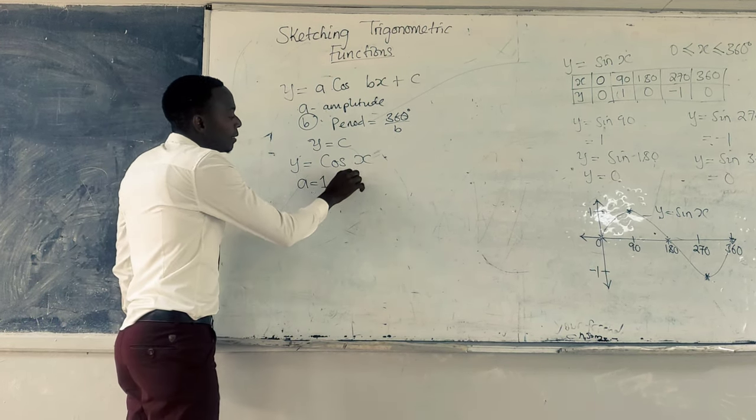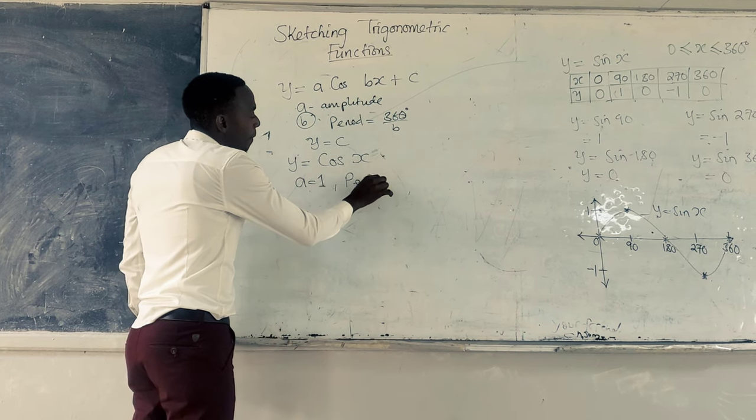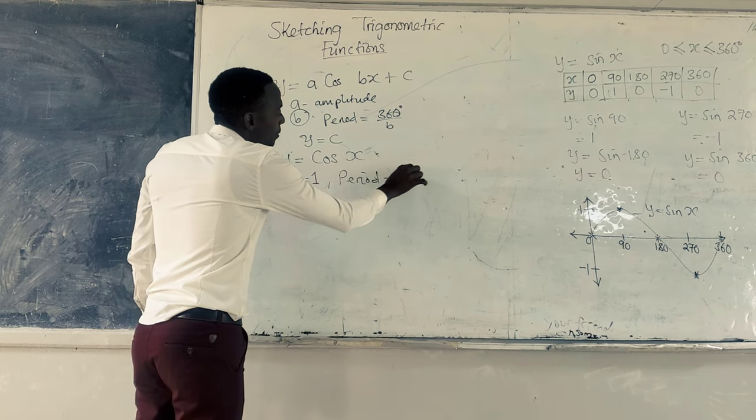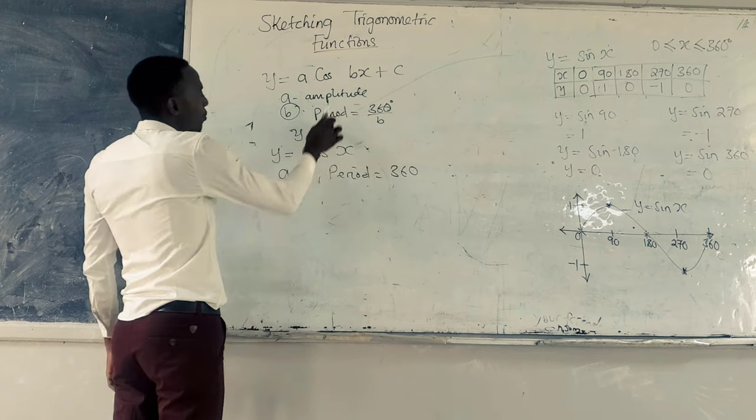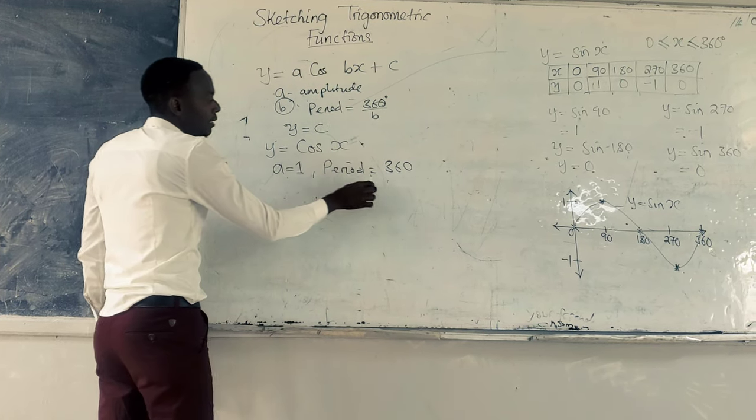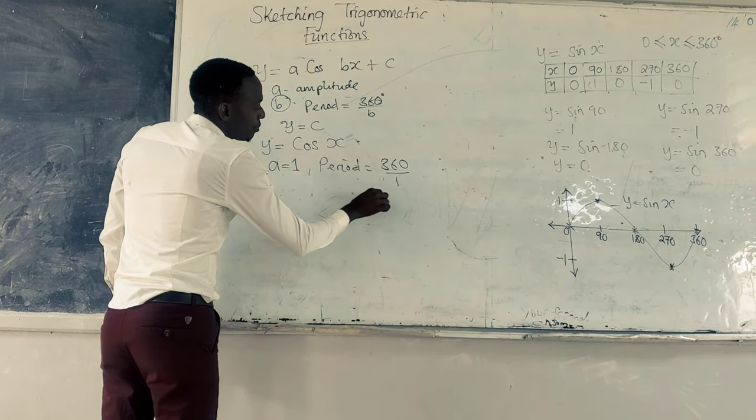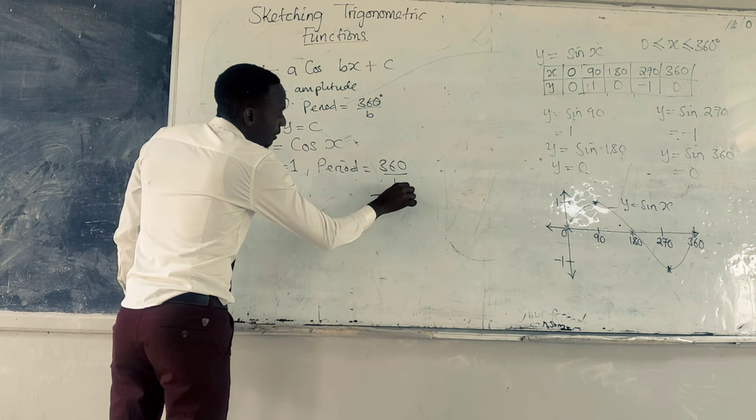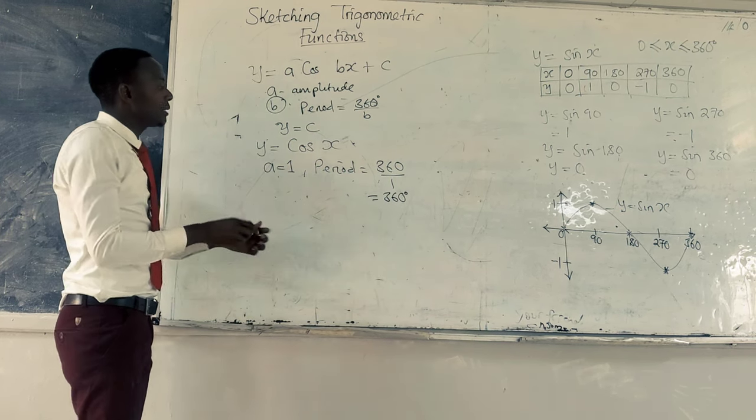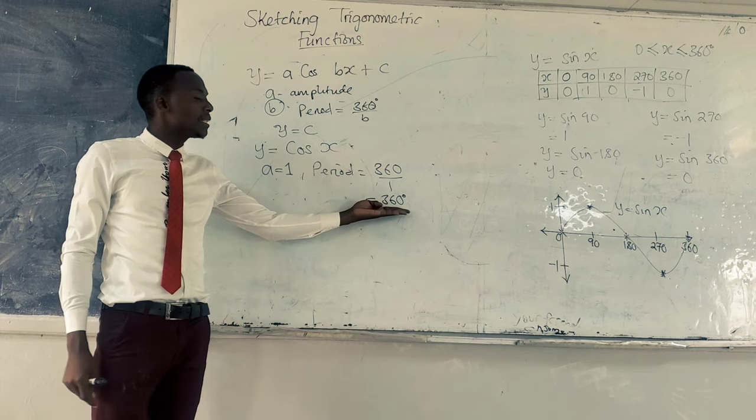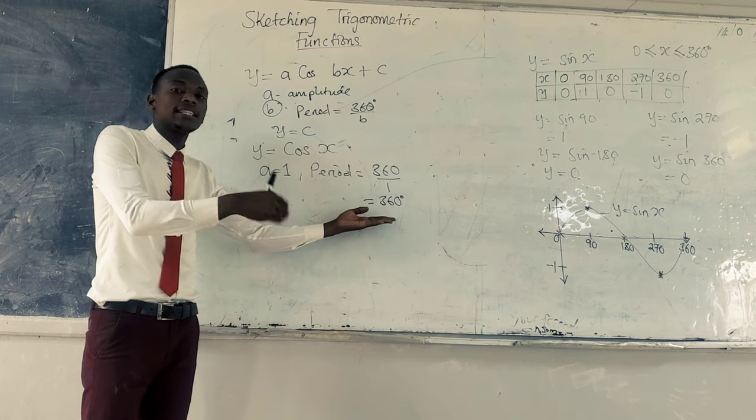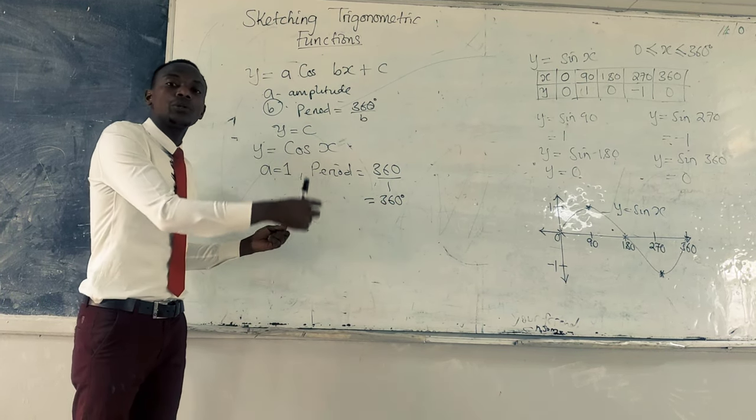And then the period, when we divide 360 by the coefficient of X, which is equal to 1, we are going to see that this is going to be a period of 360 degrees. What that means is every cycle, every after 360 degrees, it will be repeating.